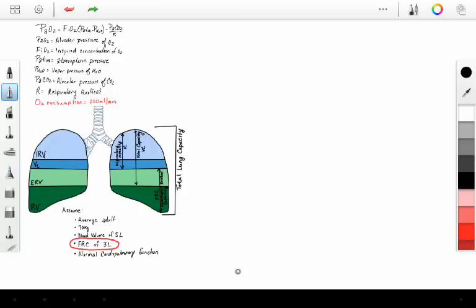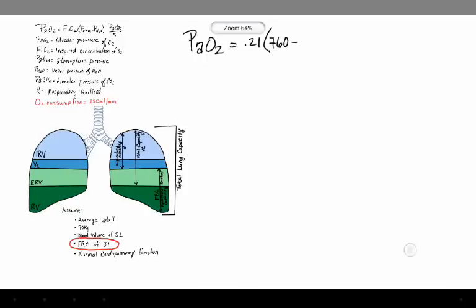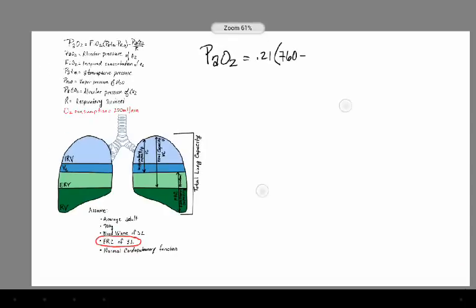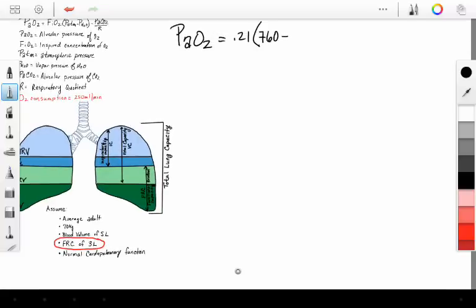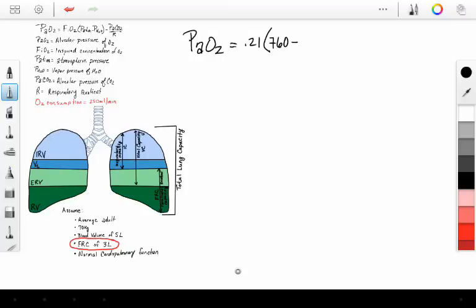Now when we're breathing room air, the alveolar partial pressure of oxygen is going to equal 0.21, right? The FiO2 of room air is 21%, times your atmospheric pressure, minus the water vapor pressure,